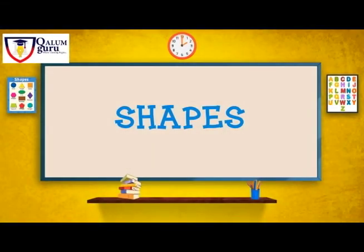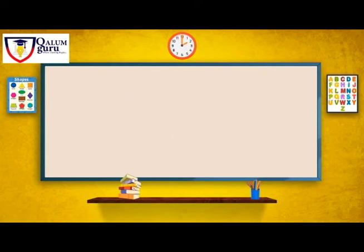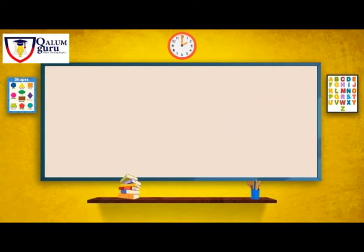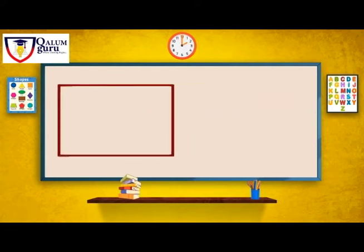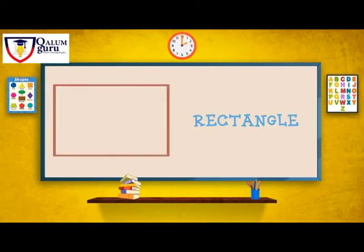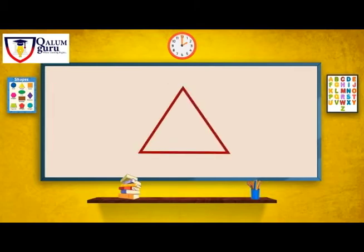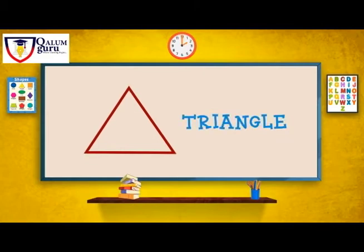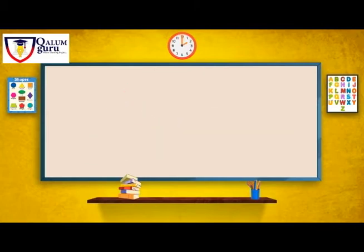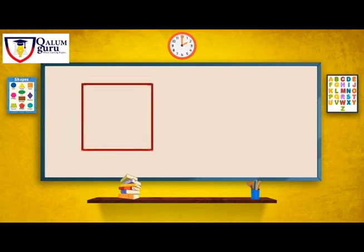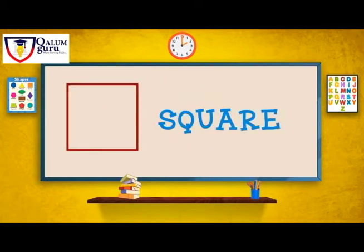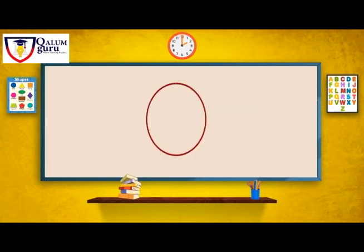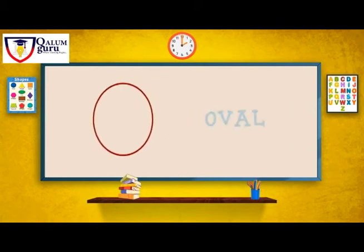Shapes. This is a circle. This is a rectangle. This is a triangle. This is a square. This is an oval.